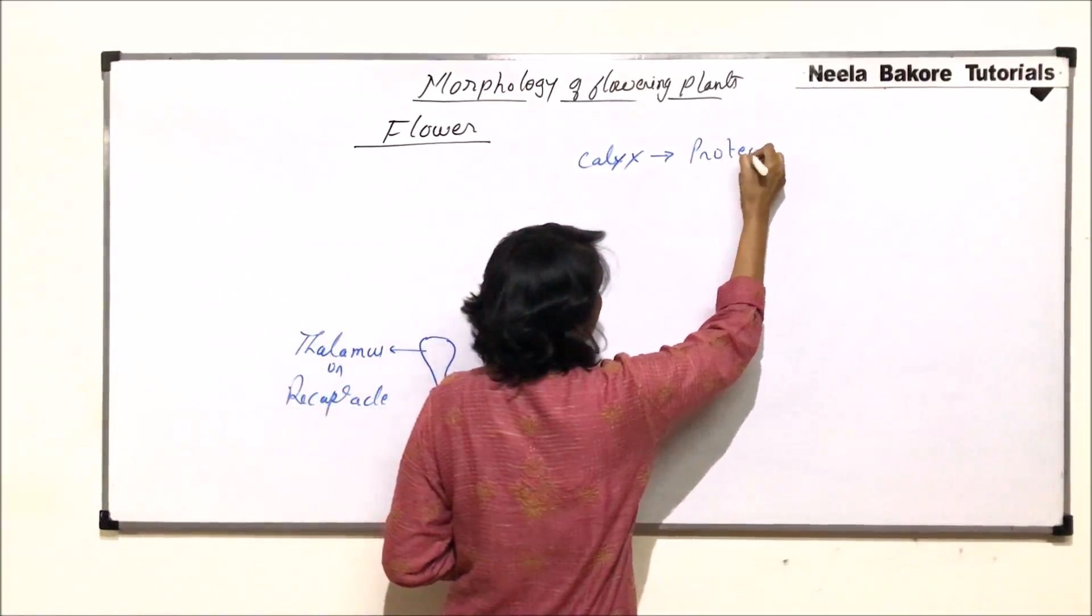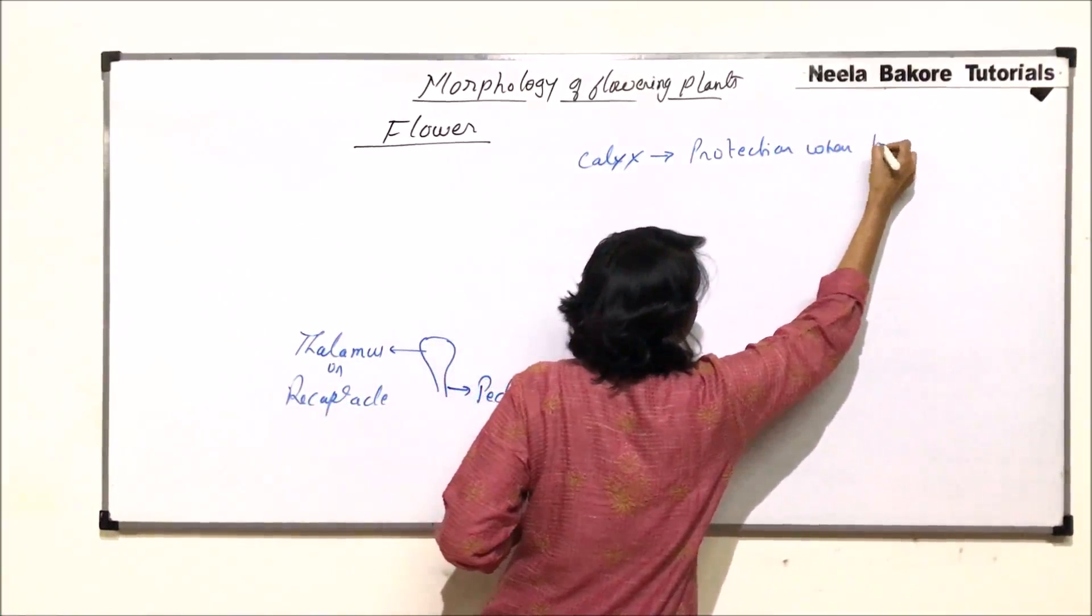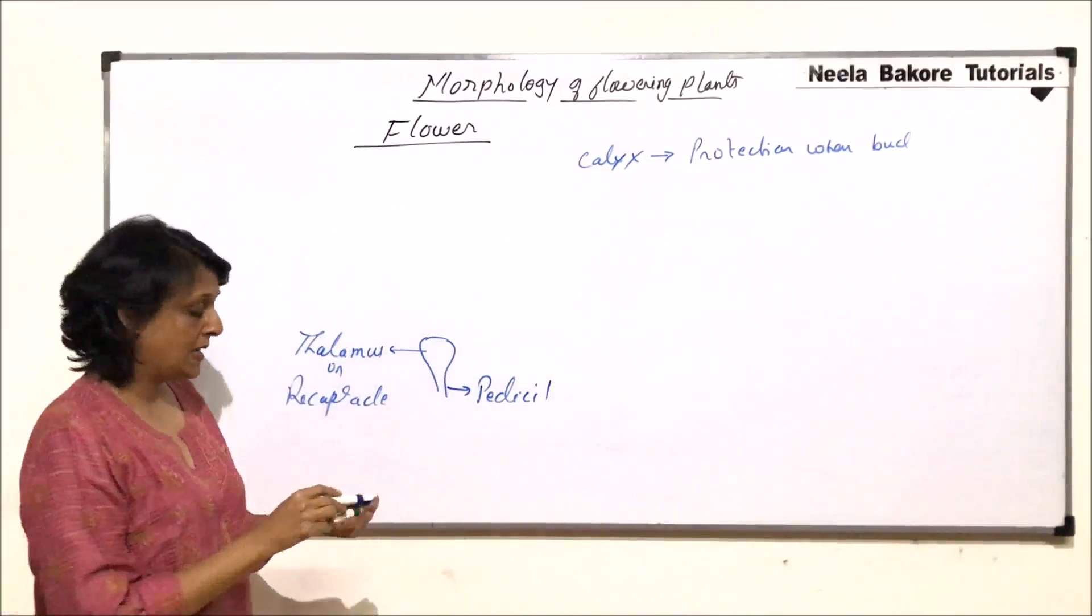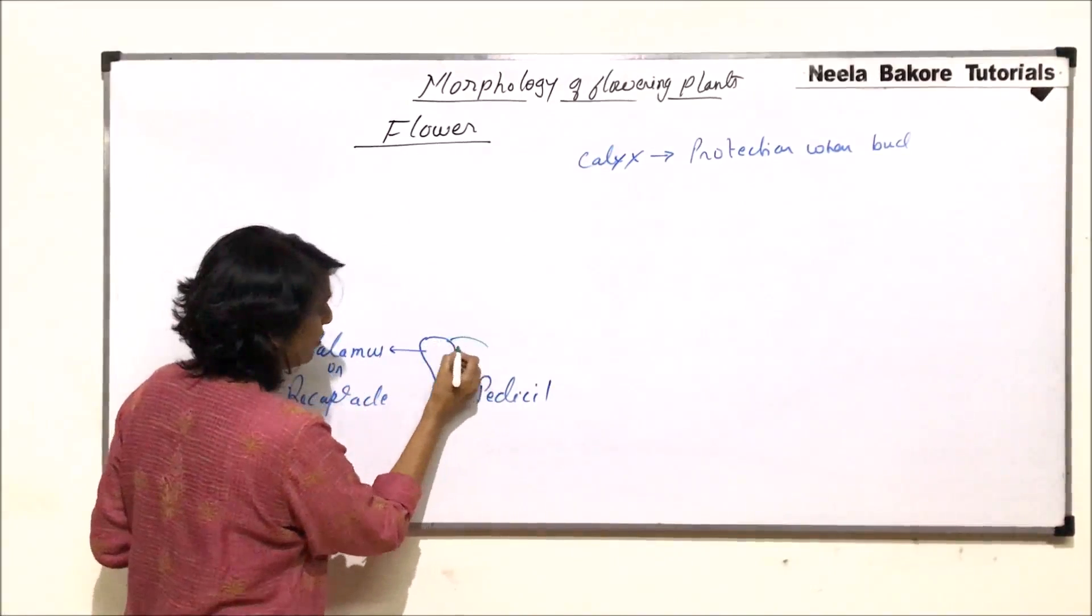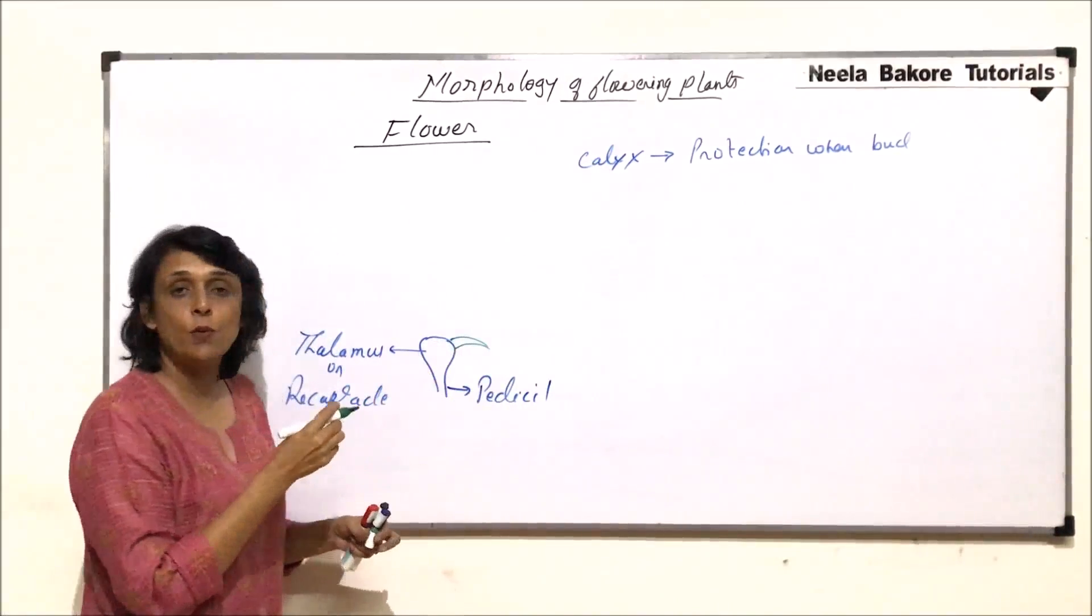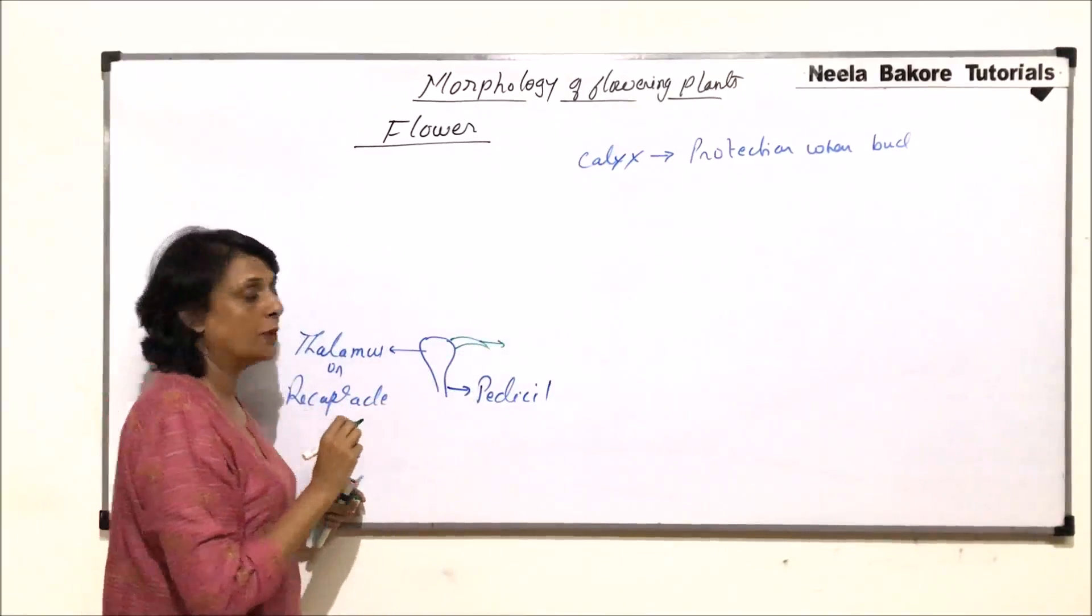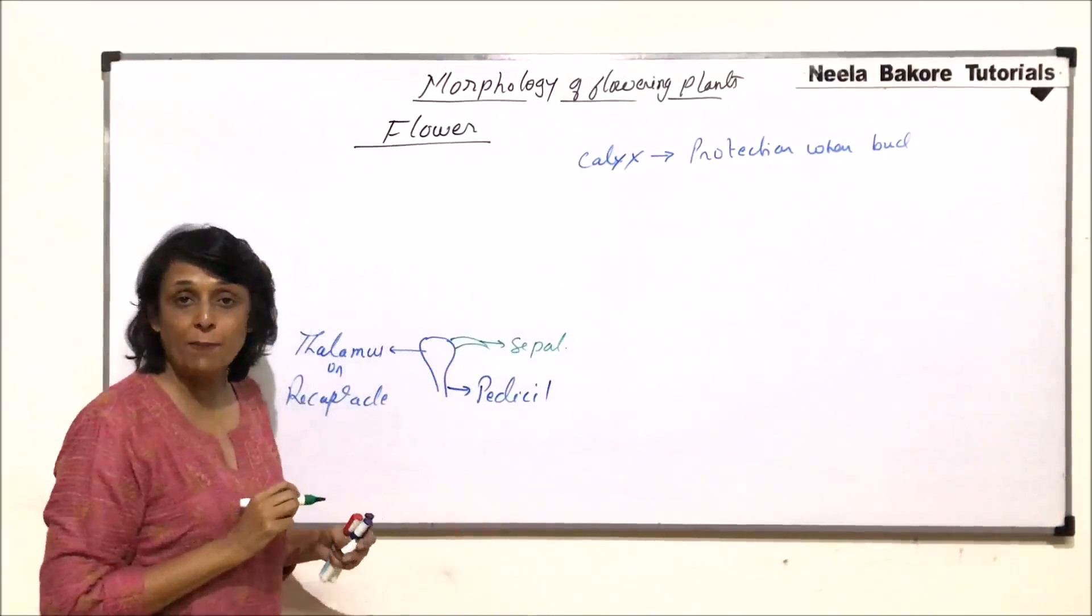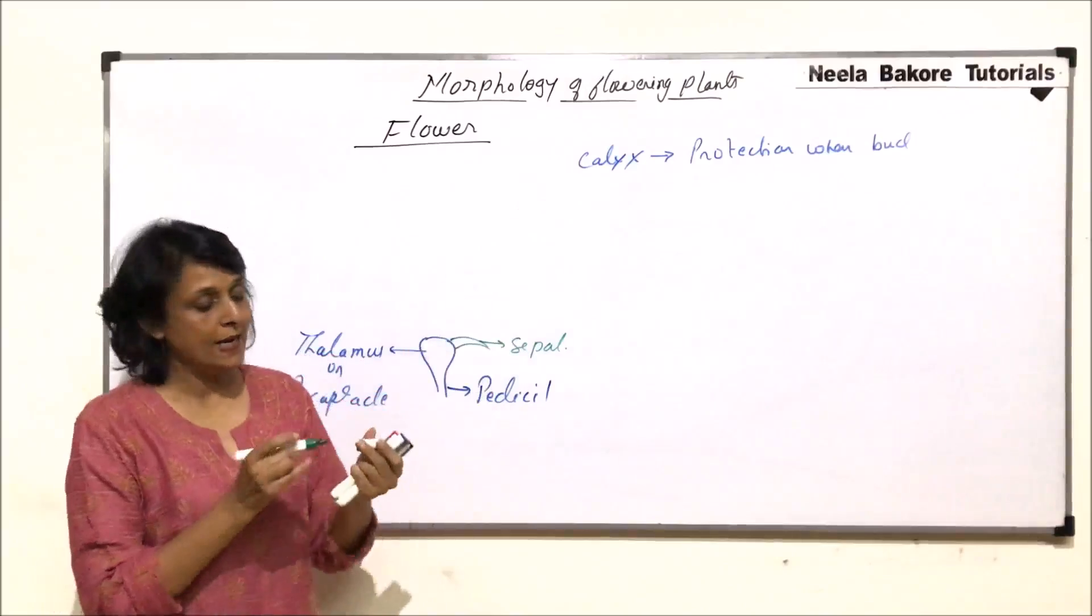Function is protection when the flower is in the form of bud and it is normally green. Small structures, they can be fused or free. We are drawing a free one here because we want to understand all the parts. Individual members are known as sepals. This is one sepal and all sepals together make the whorl that is calyx.